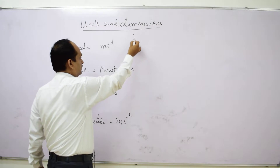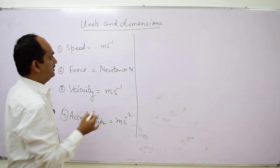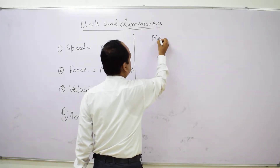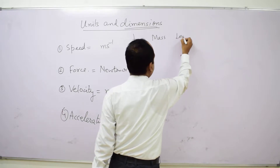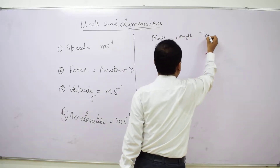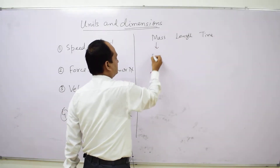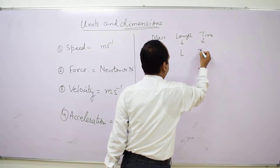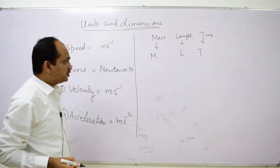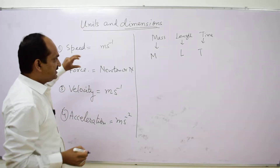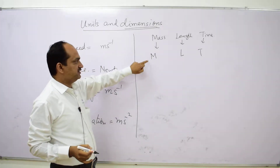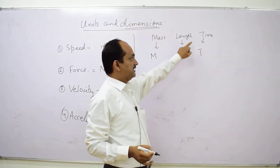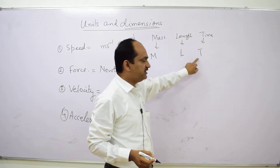One more concept was developed that is based on dimensions. Suppose we have mass, length, and time. Mass is denoted by M, length by L, and time by T. If we have to write any unit related to mass, we write it in terms of M in dimensions; for length, L; and for time, T.